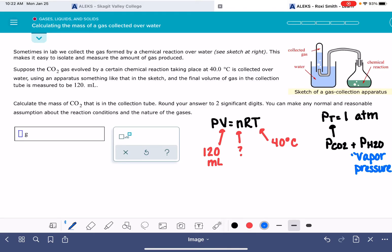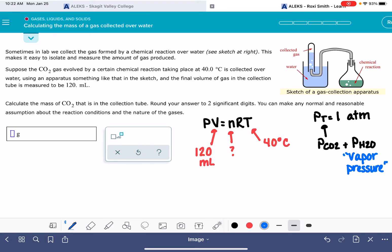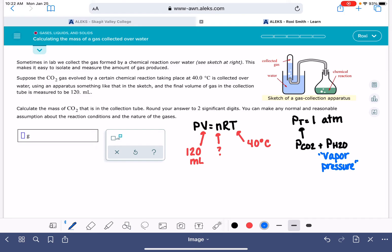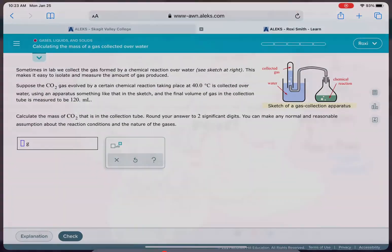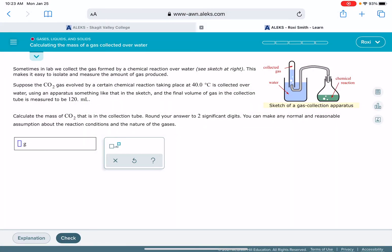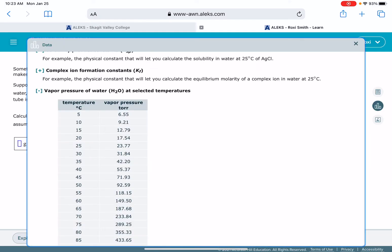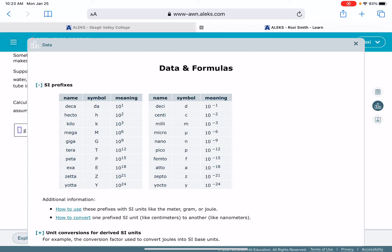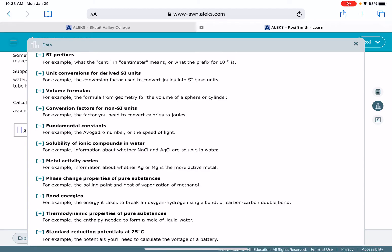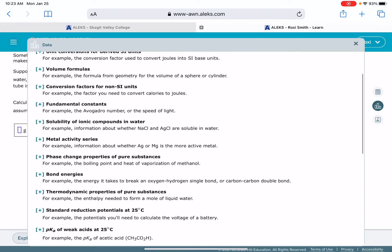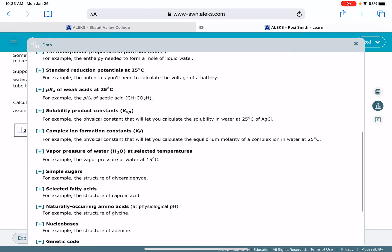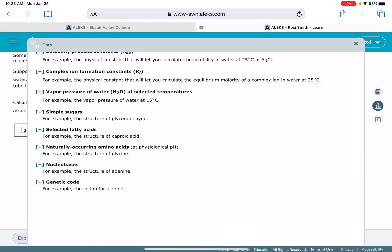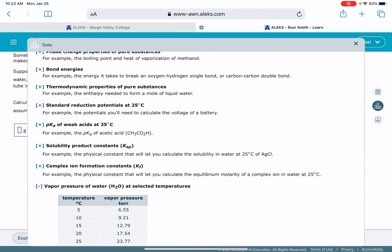So I'm going to go back to my actual ALEKS page and show you where to find that. In your data table, on the little bar graph here, click on that. One of the tabs you have in here is vapor pressure of water at selected temperatures. So we're going to click on that.